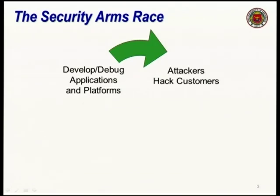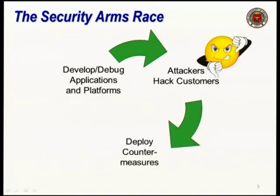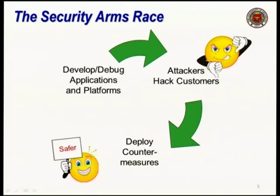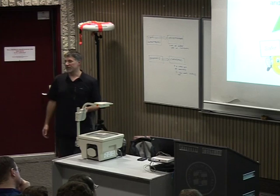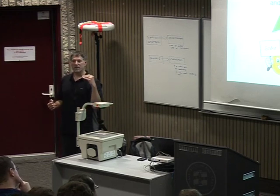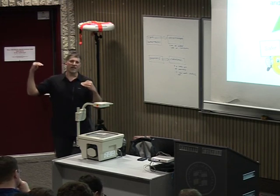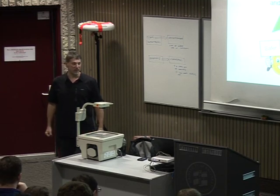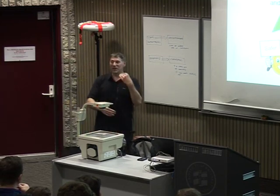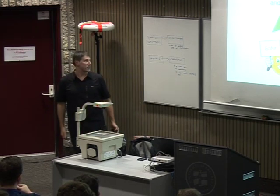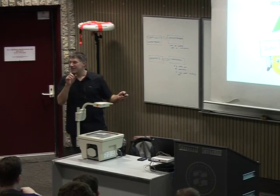Attackers try to hack your customers and take over their resources. Customers get upset, go back to the vendors, the developers, and say we'll fix that — we'll do countermeasures, fix your software, add facilities to find bugs. The system gets safer, and then you go back into this cycle again. That's the arms race of the security world: we're always trying to improve the level of software safety, and at the same time attackers are coming up with more sophisticated ways to attack. We're going to look at a small version of this arms race over about 10 years. The attackers are definitely not dumb — they're very smart people.